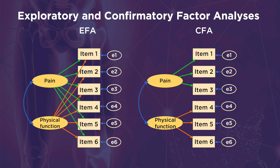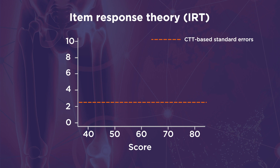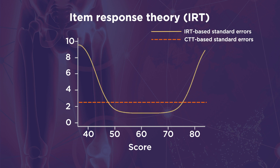When one uses EFA followed by CFA, independent samples must be used in the two separate analyses. In classical test theory, or CTT, the standard error of measurement, or SEM, is the same everywhere along the scale. This is shown as a dashed line in the figure. The IRT-based standard errors are shown with a solid line. They are lower in the middle range, yet as the scores become more extreme — such as lower than 50 or higher than 70 — the standard errors become higher, meaning precision becomes lower. A theoretical advantage of IRT is a more precise estimate of measurement error. Measurements do not have to be based on the same items as long as the items are calibrated on the same scale. This is a major advantage of IRT as it allows comparison of scores on a trait even if people took completely different items.